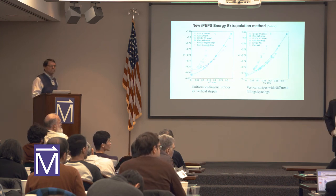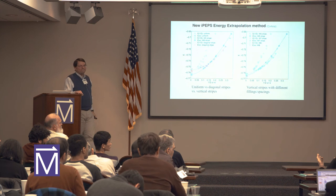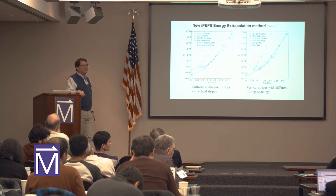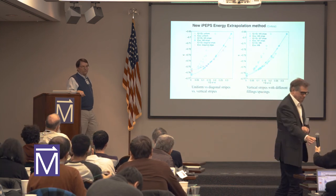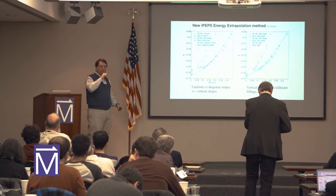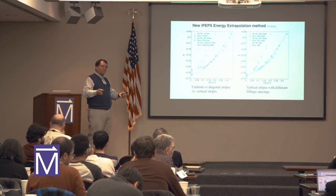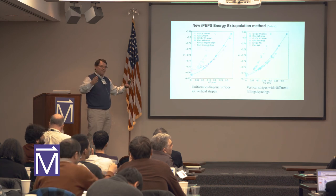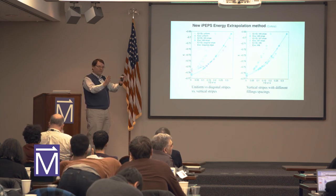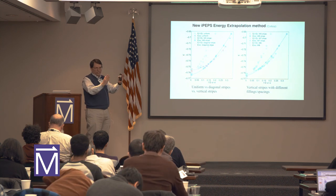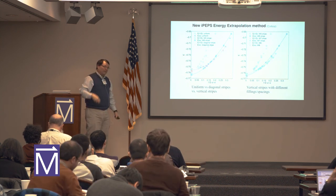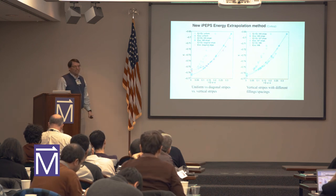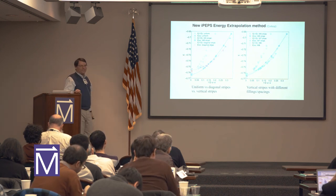Why do you think there's this near-degeneracy you almost find? That's a good question. If you look at these stripes — they have the same overall density — and if you pull holes out of each stripe, that pushes the stripes together. The stripes repel each other, so that energy is somehow matching the energy within the stripes. But why is it so close? I don't know.